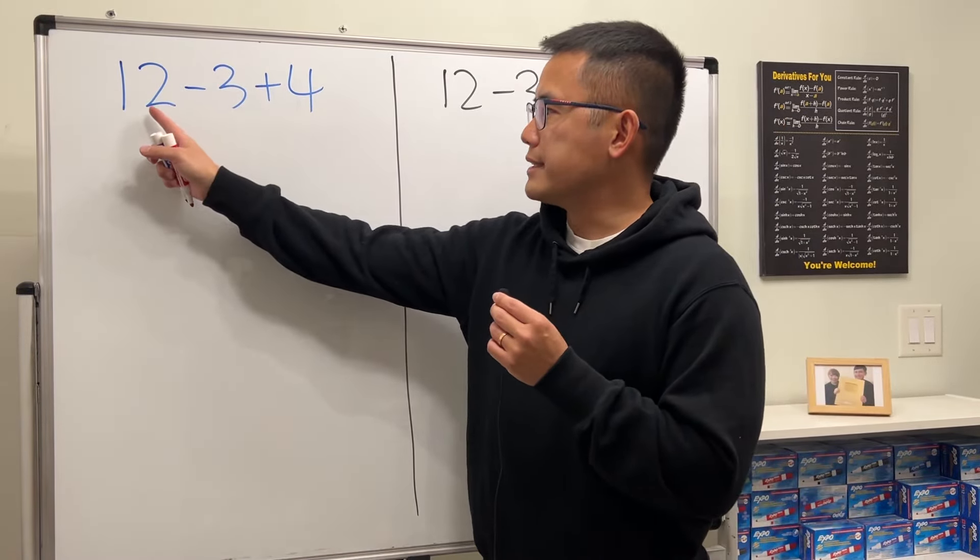Here's the common mistake. A lot of people will just do the addition first and they will say 3 plus 4 which is 7, and then they will have the 12 minus 7 and they will say the answer is 5.